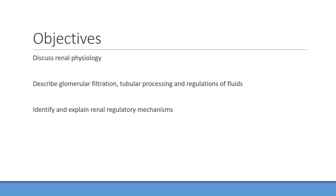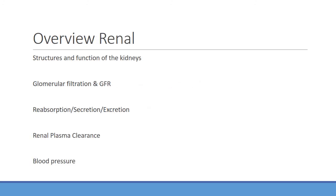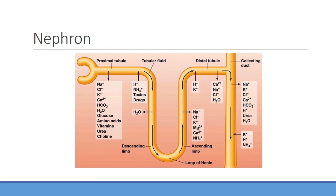Today we're going to look at renal physiology — things like GFR, glomerular filtration, tubular processing, how we regulate fluids in the kidneys, and then some of the regulatory mechanisms that go into play. We already covered some cardio stuff, so the renin-angiotensin system is going to be integral to maintaining kidney flow, and aldosterone is going to come up here again. Today we'll look at structures and functions of the kidney, GFR, reabsorption, secretion, excretion of fluids, plasma clearance, and blood pressure regulation.